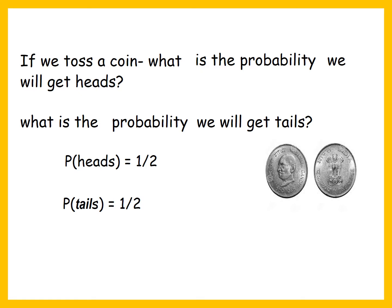For example, if we toss a coin, what will be the probability that we will get a head, or what will be the probability that we will get tails? If we toss a coin, heads or tails can come. The probability of getting heads is equal to 1 by 2. There are two outcomes possible — heads or tails. So the probability of getting heads is 1 by 2, and the probability of getting tails is also equal to 1 by 2.